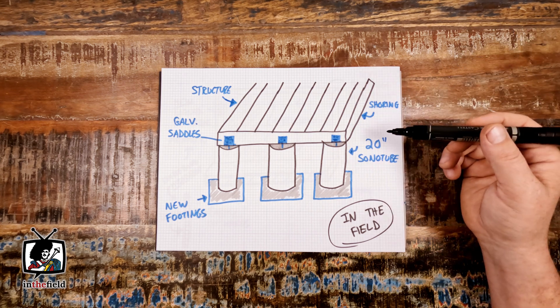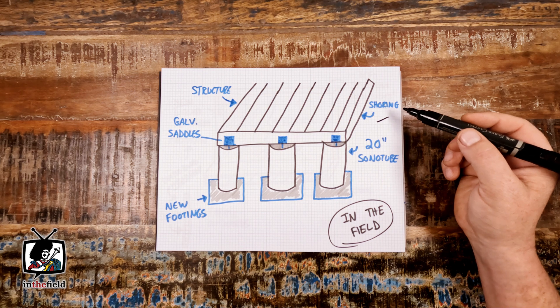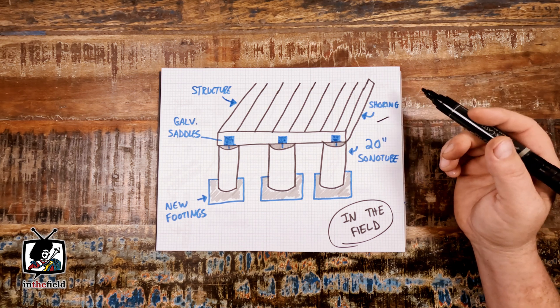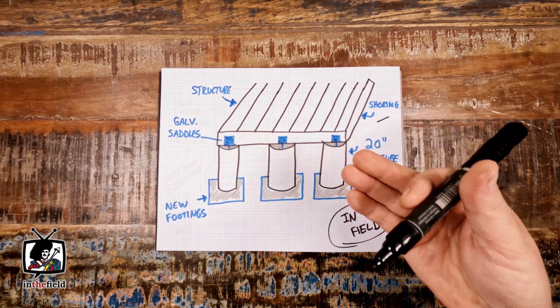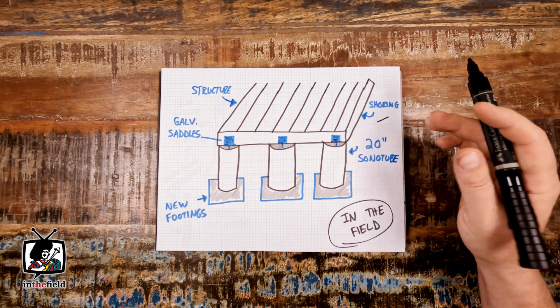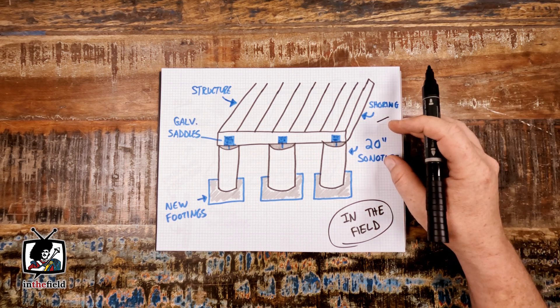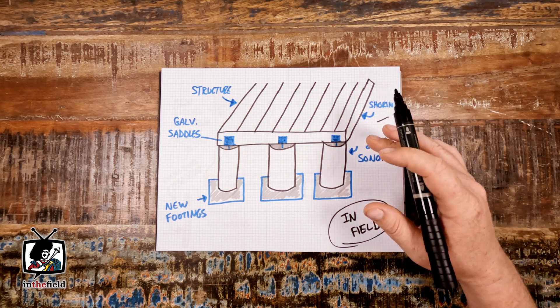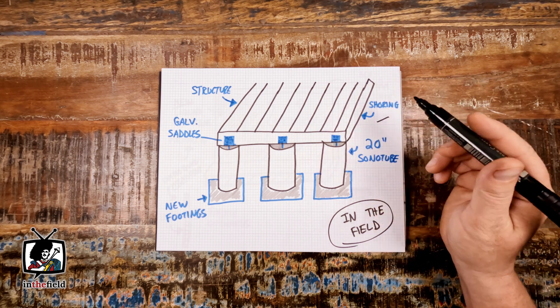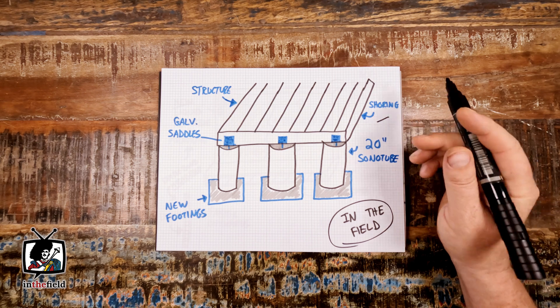We started with some custom lengths of telescopic jacks that could be tightened beneath the structure and the access here was only approximately 24 inches in height. So crawling under this structure and shoring it up in a safe way wasn't the most straightforward exercise.